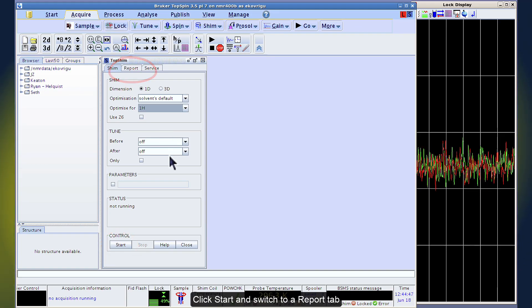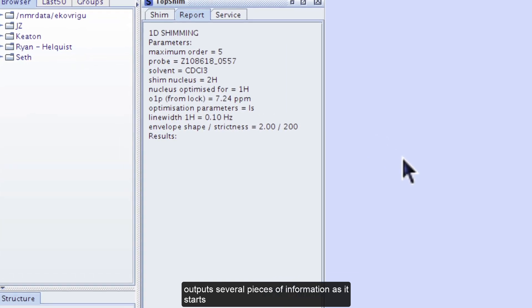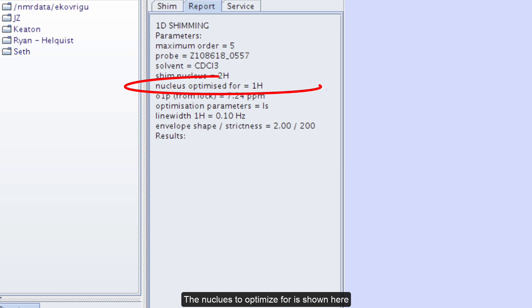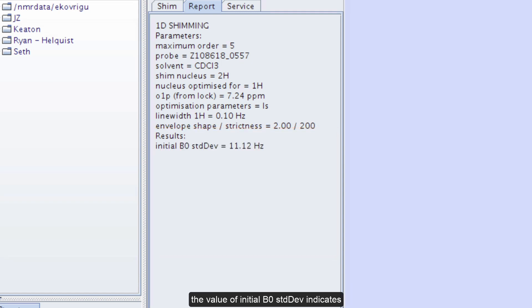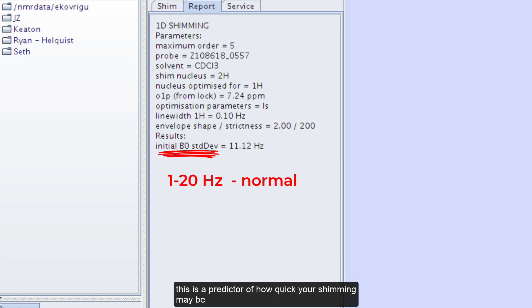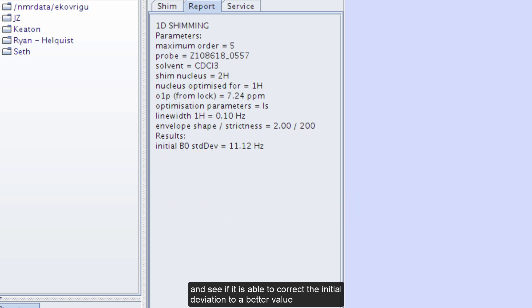Click start and switch to report tab. The topshim algorithm outputs several pieces of information as it starts, which you can mostly ignore. The nucleus to optimize for is shown here. What is important to note is the results section. The value of initial B0 standard deviation indicates how strong the initial variation of the magnetic field is already on the length of the sample. Several per hour is normal for a new sample inserted into the magnet where a standard shim set was loaded. This is a predictor of how quick your shimming may be. If you see tens of hertz, you may expect shimming to work for a while and likely you will have to shim more times. If you see hundreds of hertz, the magnetic field is really off. In any case you let top shim continue and see if it is able to correct the initial deviation to a better value.